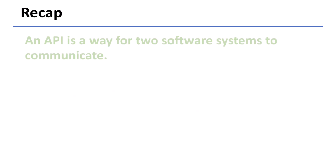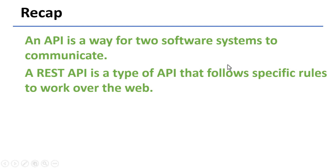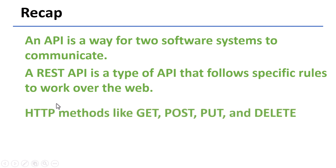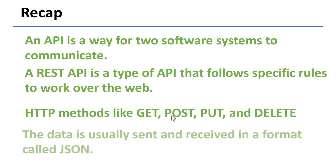Let us quickly recap what we learned today. An API is a way for two software systems to communicate. A REST API is a type of API that follows specific rules to work over the web. REST APIs use HTTP methods like GET, POST, PUT, and DELETE to request and manage data. The data is usually sent and received in a format called JSON. Thanks for watching, and I will see you in the next one.